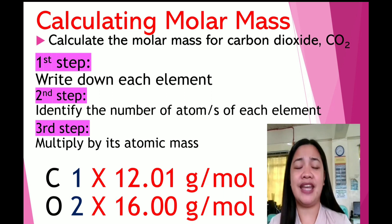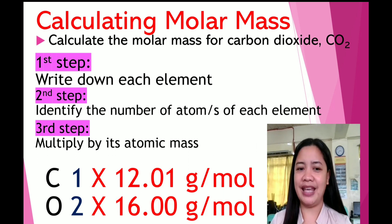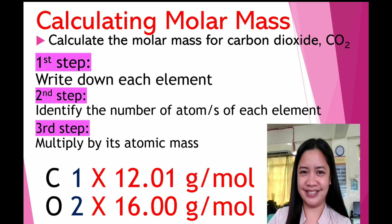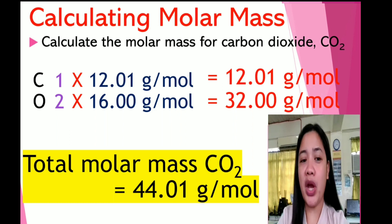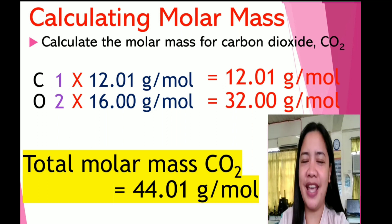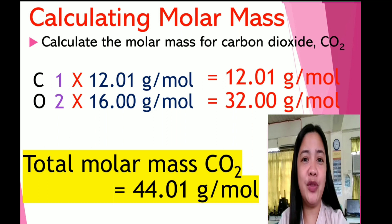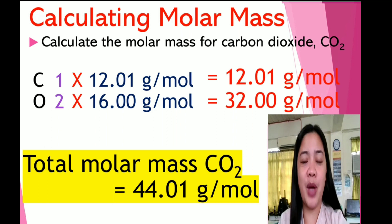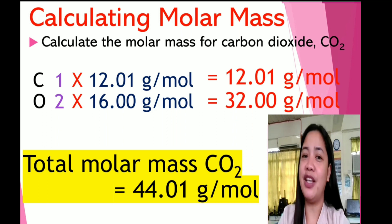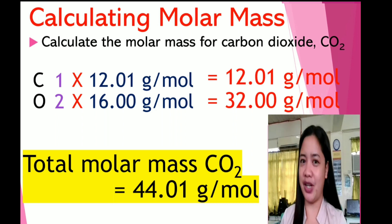Take note: since carbon has one atom and oxygen has two, you have to multiply each by its atomic mass. Since we are done identifying the number of atoms and multiplying by their atomic mass, you have to get the sum. We have 12.01 grams per mole plus 32.00 grams per mole. Therefore, the total molar mass for carbon dioxide is 44.01 grams per mole.